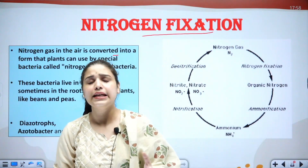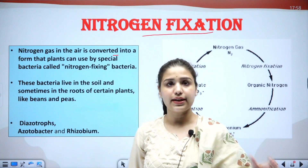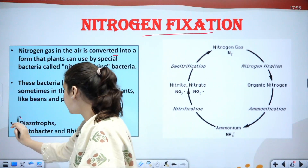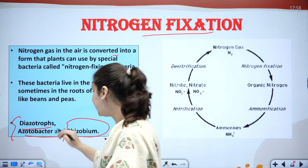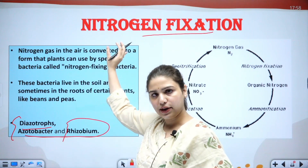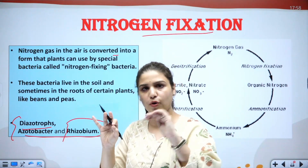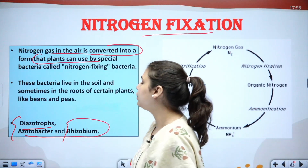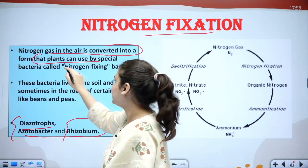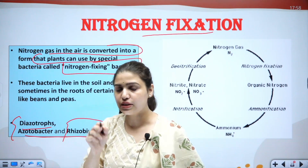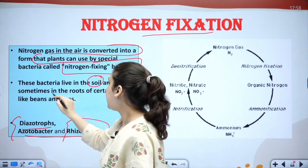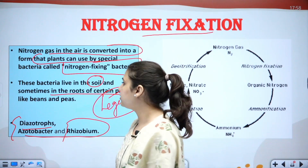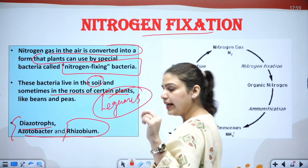In nitrogen fixation, certain bacteria convert atmospheric nitrogen into organic nitrogen that can be consumed by plants and animals. These include diazotrophs, azotobacter, and mainly rhizobium. These nitrogen-fixing bacteria live in the soil and sometimes in the roots of certain plants like beans, peas, and mainly legumes.